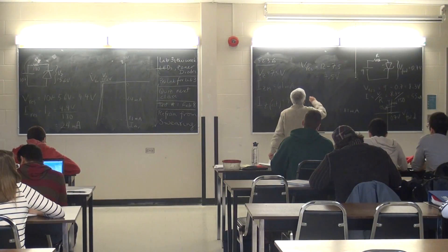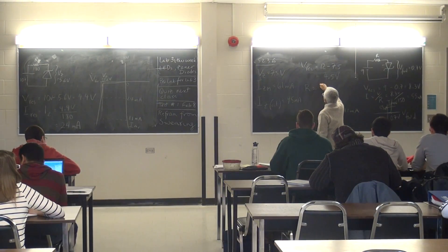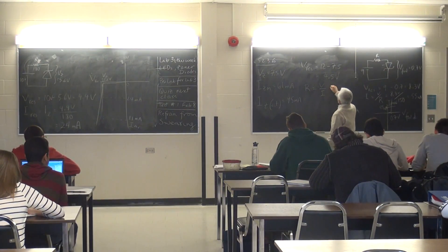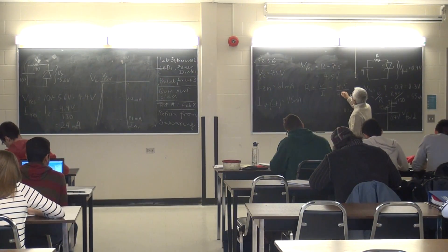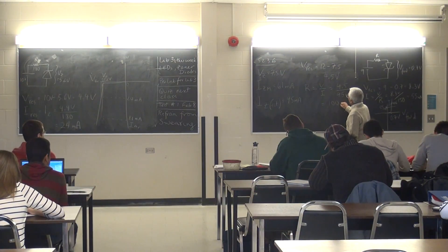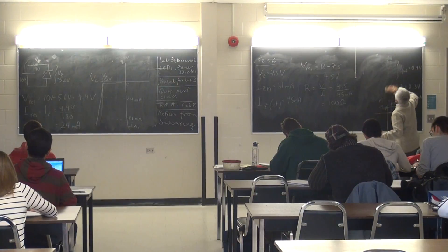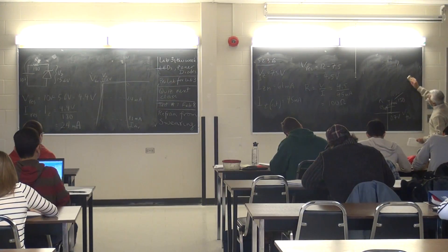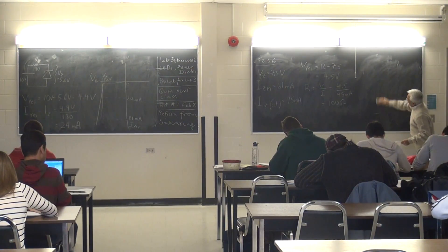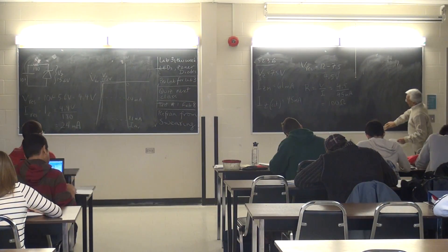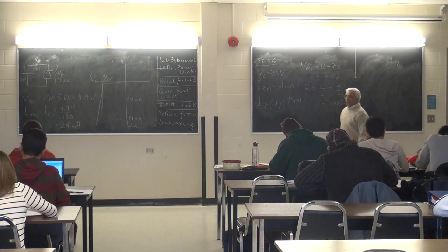Can I calculate the size of the resistor? R = V / I = 4.5 volts divided by 45 milliamps = 100 ohms.